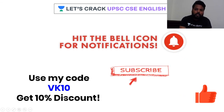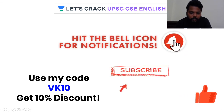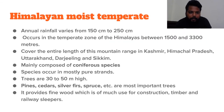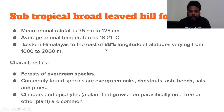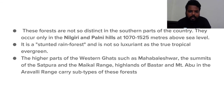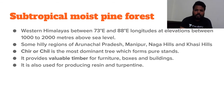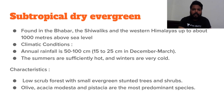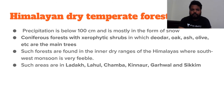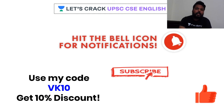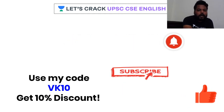Use my code VK10 to get a 10% discount. For these last hill-range forest types — like those in the Nilgiri Hills and Palani Hills — go through the slides, make a pause, and review their distribution. They are not among the most heavily tested but worth going through once. Thank you for watching — have an awesome day. Jai Hind!